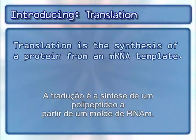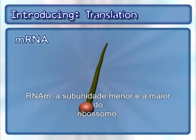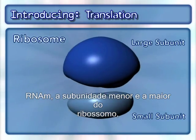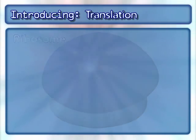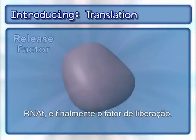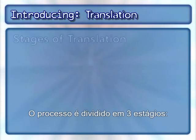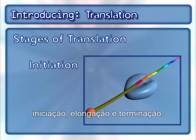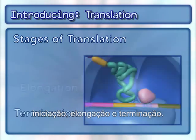Translation is the synthesis of a protein from an mRNA template. This process involves several key molecules, including mRNA, the small and large subunits of the ribosome, tRNA, and the release factor. The process is broken into three stages: initiation, elongation, and termination.